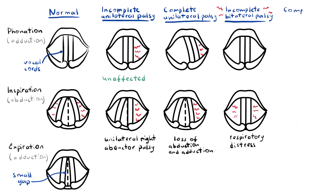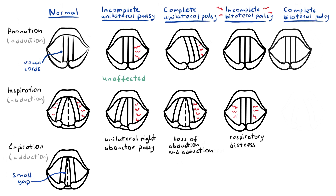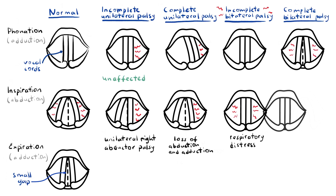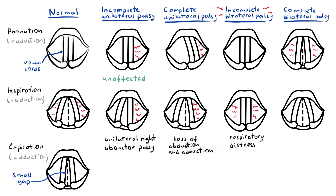With a complete bilateral palsy, both the abductor and adductor fibers are affected on both sides. This means the adductor fibers cannot close the vocal cords fully. On inspiration, the vocal cords sort of open and a reasonable glottic opening exists. On phonation, the vocal cords do not close properly due to bilateral loss of the adductors. Thus, bilateral incomplete palsy is more dangerous than bilateral complete palsy.